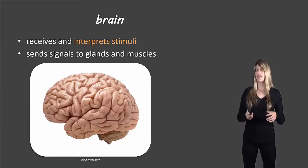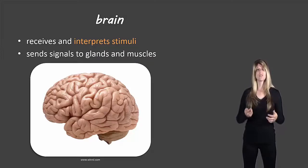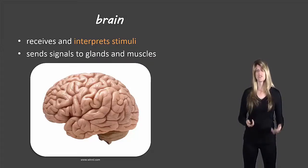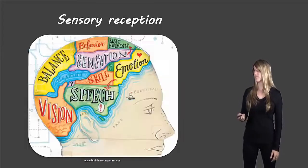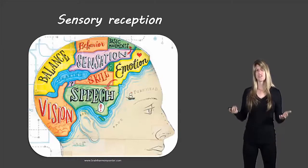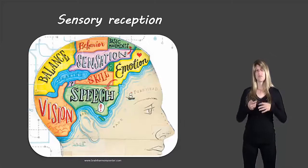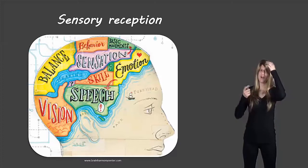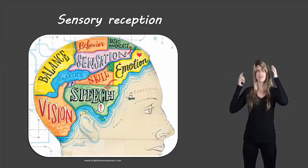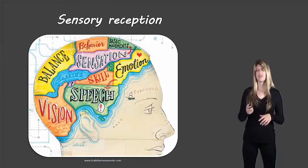The brain also sends signals to the glands and the muscles so that they can react in a certain way. And just an interesting side point — in order to perceive various senses, we have all these different parts of our brain.